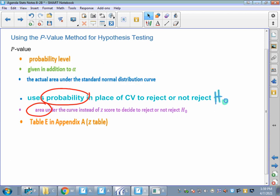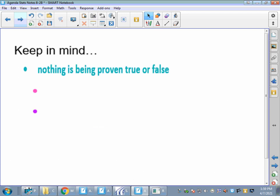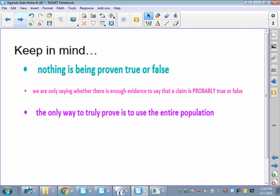Keep in mind, nothing is being proven true or false. Remember, we can't say definitively that something is true and false. We're only saying if there's enough evidence to say that a claim is probably true or probably not true. We can't know unless we use the whole population, and that's our only definitive proof, the whole population.